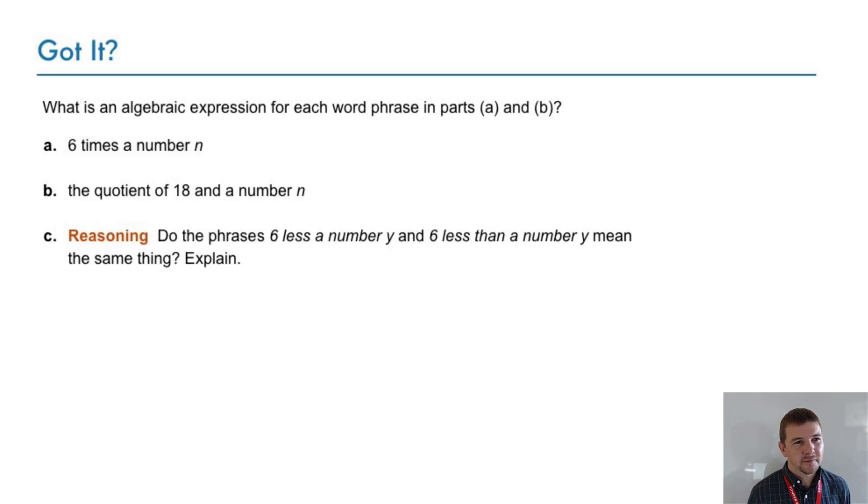Your turn: What is an algebraic expression for each word phrase in parts A and B? Part A says: 6 times a number n. Part B says: the quotient of 18 and a number n. And part C is a reasoning item: Do the phrases '6 less a number y' and '6 less than a number y' mean the same thing? Explain.